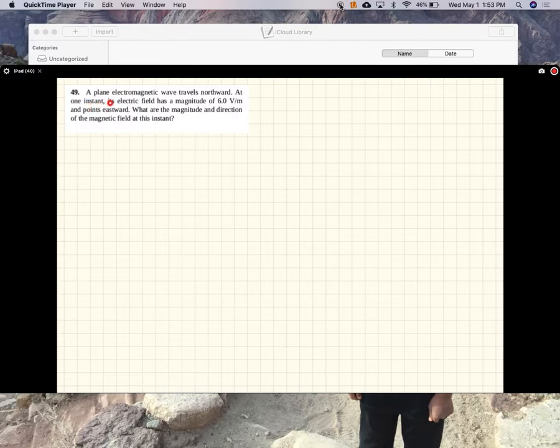Okay, this problem says a plane electromagnetic wave travels northward. At one instant, if the electric field has a magnitude of six volts per meter and points eastward, what is the magnitude and direction of the magnetic field at this instant?